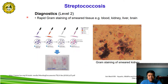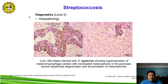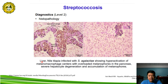For diagnostics, level 2 diagnostics include rapid gram staining of smeared tissue. The tissues of interest are the blood, kidney, liver, and brain. This is a gram staining of a smeared kidney infected with streptococcosis. Another level 2 diagnostic includes histopathology — here we have a liver and pancreas of Nile tilapia infected with Streptococcus agalactiae.